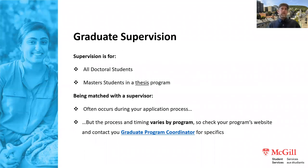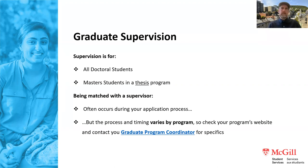Most graduate students will have a supervisor — all doctoral students and all master's students in thesis programs. Your relationship with your supervisor will be one of the most influential parts of your graduate studies. Most of you have likely already been matched, but the process varies by program. Science students probably selected a supervisor during the application process, whereas a PhD student in humanities might not select one until the end of their first or even second year. If you're unsure, check your program's website or contact your GPC.